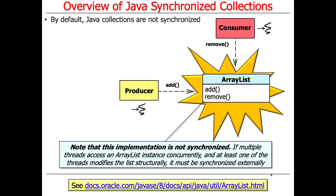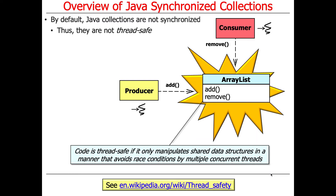If multiple threads access an ArrayList instance concurrently, and at least one of the threads modifies the list structurally — like makes it grow — it must be synchronized externally, by using a synchronized statement, a synchronized method, a reentrant lock, or something. It's not done internally, and therefore it would not be thread-safe. It's only thread-safe if you manipulate the internal shared mutable data in a way that avoids race conditions when multiple threads read and write to it at the same time.